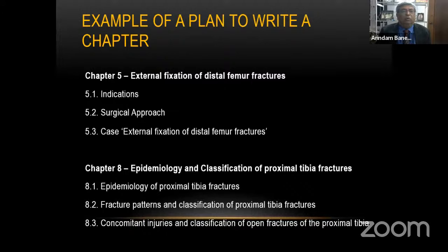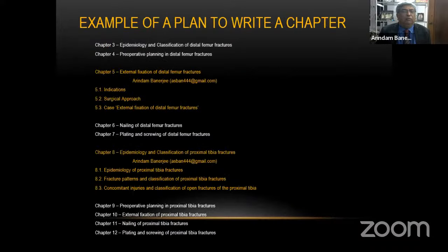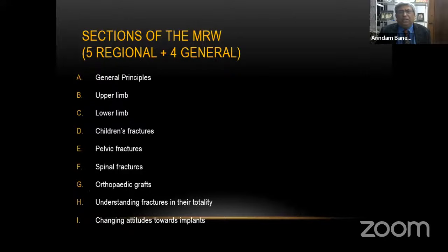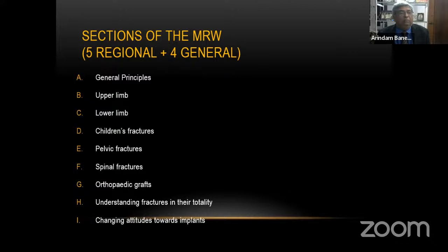They had asked me to write a chapter on external fixators of distal femoral fractures and another on proximal tibia, and they gave very precise instructions on how to write a chapter. So we decided to give our editors and authors a little more freedom. We divided the entire project into five regional groups and four general groups. The regional groups were upper limb, lower limb, pelvis, and spine, whereas the general chapters covered general principles, orthopedic graphs, understanding fractures in totality, and the change of demography leading to the change of implants.